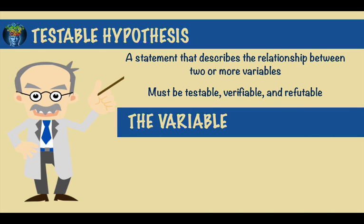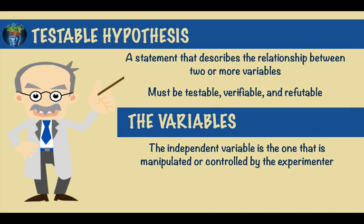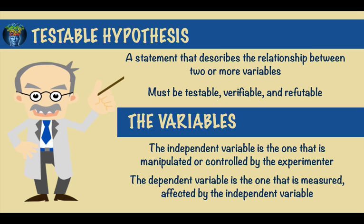The variables are either dependent or independent. The independent variable is the one that is manipulated or controlled by the experimenter, while the dependent variable is the one that is measured and affected by the independent variable.